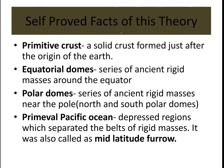According to this theory, Daly proposed several foundational concepts. The first is the primitive crust — a solid crust formed just after the origin of the earth. Around the equator, the ancient rigid landmass is called the equatorial dome. In the polar regions, at both the north and south poles, the rigid landmasses are called polar domes. Between these domes lies a depressed region called the primeval Pacific Ocean, also referred to as the mid-latitude furrow.